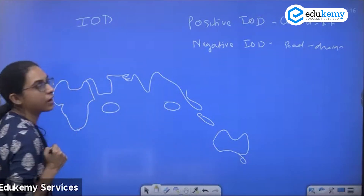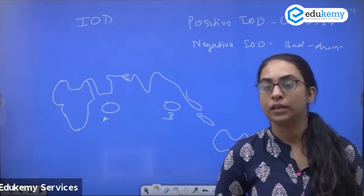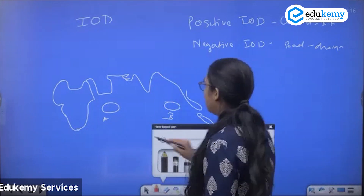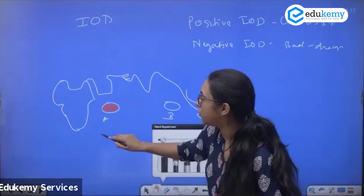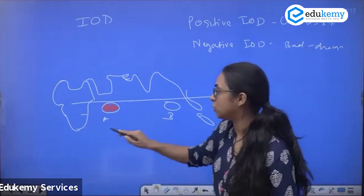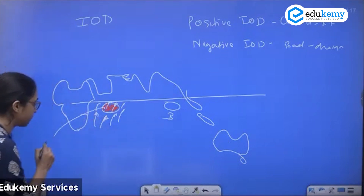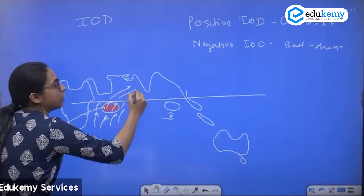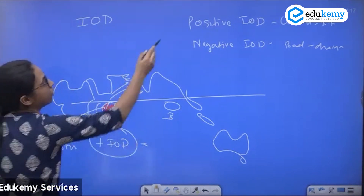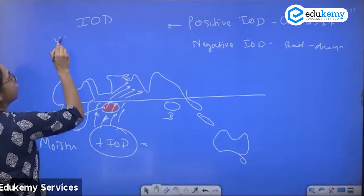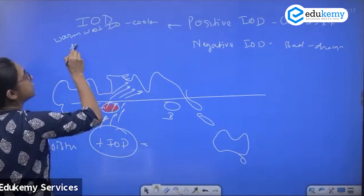In positive IOD, the western area is warm and the eastern area is cool. The monsoonal winds come in, acquire moisture from the warmer western Indian Ocean, and bring rainfall to India. So positive IOD means a warmer West Indian Ocean and a cooler East Indian Ocean.